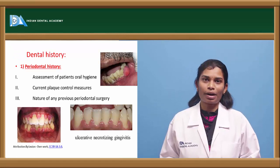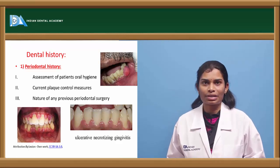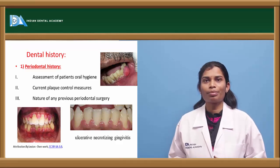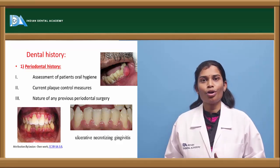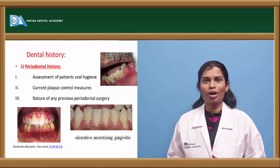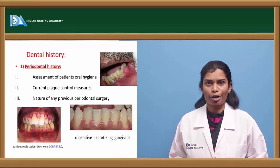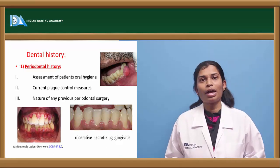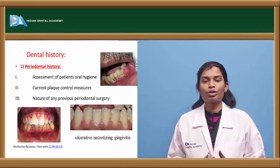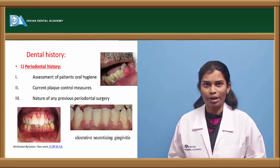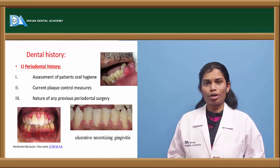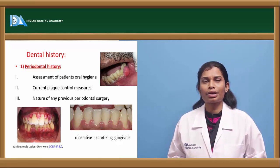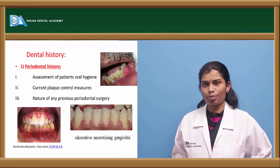History also includes dental history. The first component is periodontal history. The periodontium is very important for the success of your fixed partial denture, so you have to carry out a thorough examination. Ask the patient about current oral hygiene conditions and also about recent periodontal procedures undergone — the duration, timings, and any history related to previous periodontal procedures.